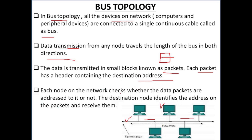Each node on the network checks whether the data packets are addressed to it or not. Data jo koi bhi device transmit karta hai woh bus mein dono directions mein travel karta hai, aur jitne bhi nodes attached hote hain woh un data packets ko check karte hain — woh check karte hain ke jo destination address hai woh unka hai ya nahi. The destination node identifies the address on the packets and receives them.